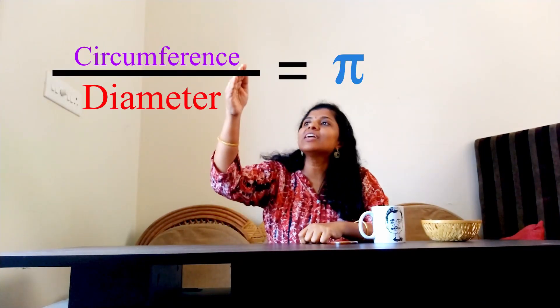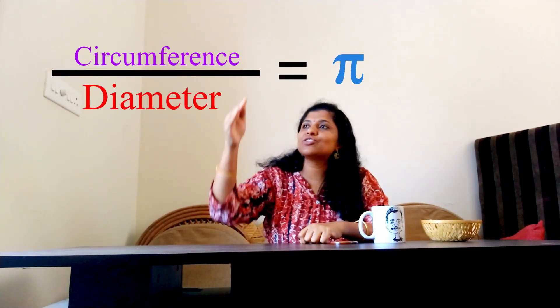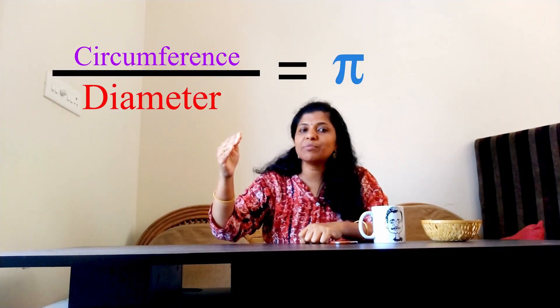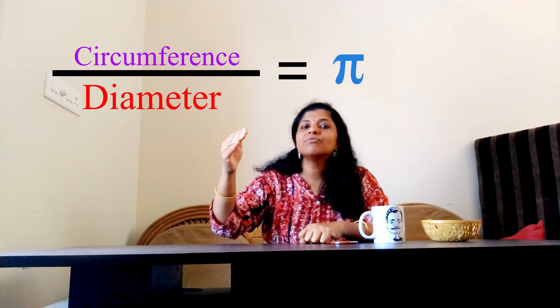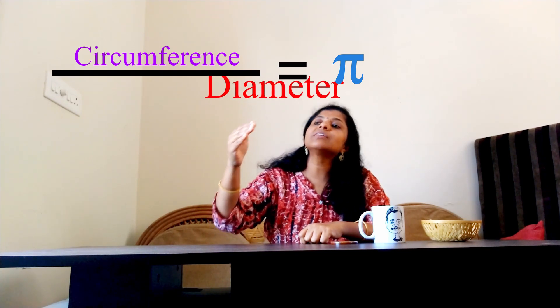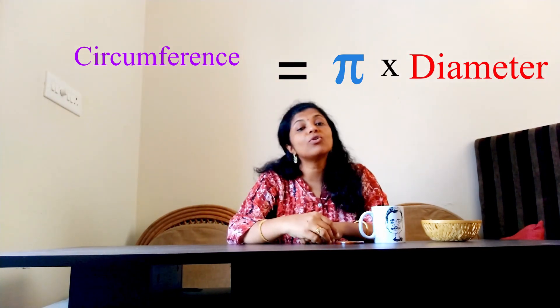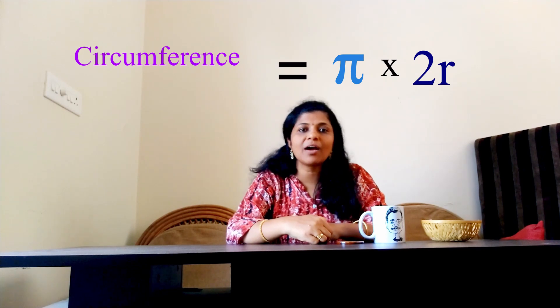If we rearrange the ratio of circumference to diameter, we get circumference equal to pi times d, or 2 pi r.